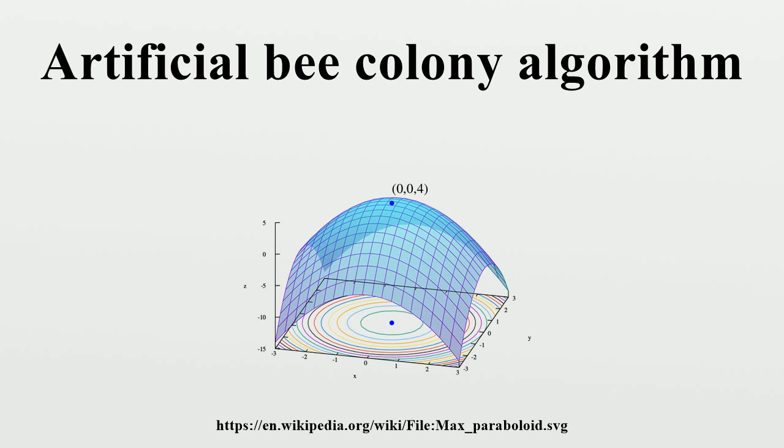After all employed bees complete the search process, they share the position information of the sources with the onlookers on the dance area. Each onlooker evaluates the nectar information taken from all employed bees and then chooses a food source depending on the nectar amounts of sources.